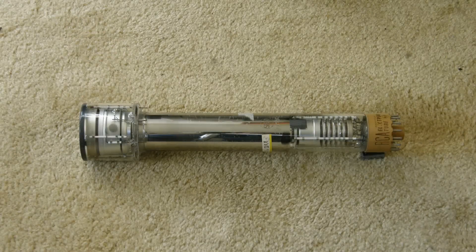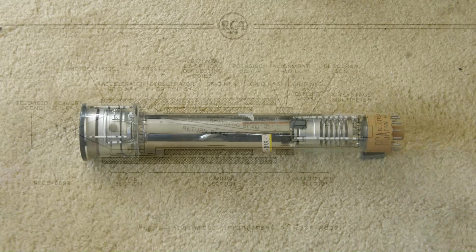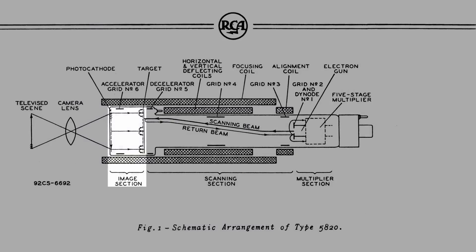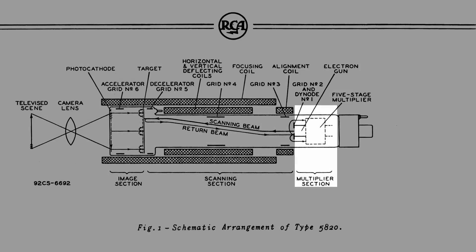The RCA 5820 Image Orthicon Television Camera Tube. The 5820 has three sections: an image section, a scanning section, and a multiplier section.